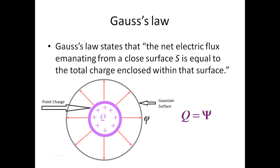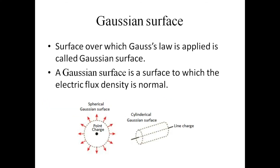We can say q is equal to psi, where q represents the charge enclosed within the Gaussian surface and psi represents the electric lines of force crossing the Gaussian surface. The surface over which Gauss law is applied is called the Gaussian surface. The shape of the Gaussian surface depends upon the type of charge distribution.